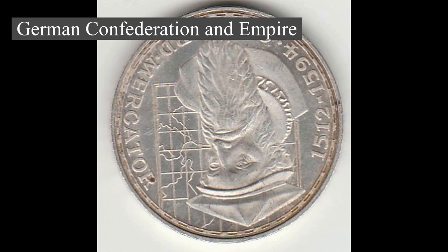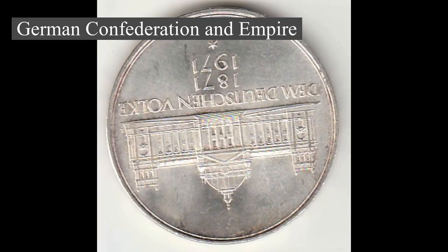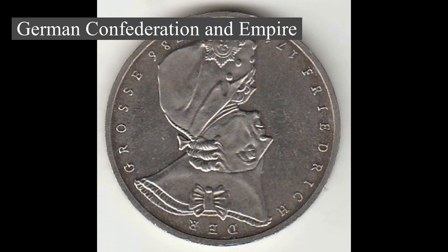A dual alliance was created with the multinational realm of Austria-Hungary. The Triple Alliance of 1882 included Italy. Britain, France, and Russia also concluded alliances to protect against Habsburg interference with Russian interests in the Balkans or German interference against France. At the Berlin Conference in 1884, Germany claimed several colonies including German East Africa, German Southwest Africa, Togoland, and Cameroon. Germany further expanded its colonial empire to include holdings in the Pacific and China.